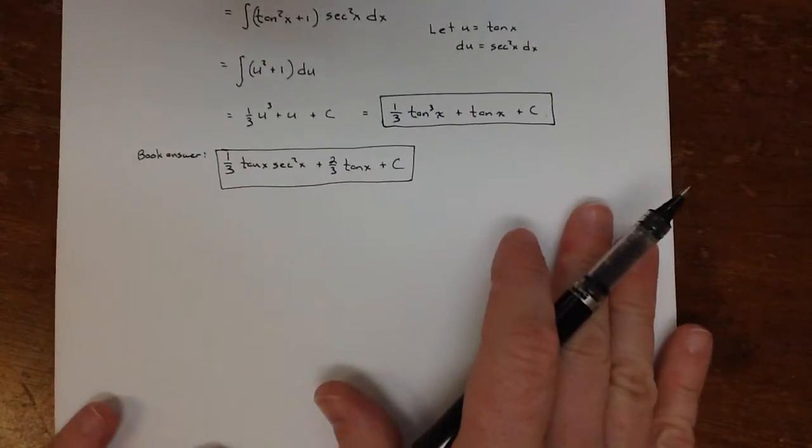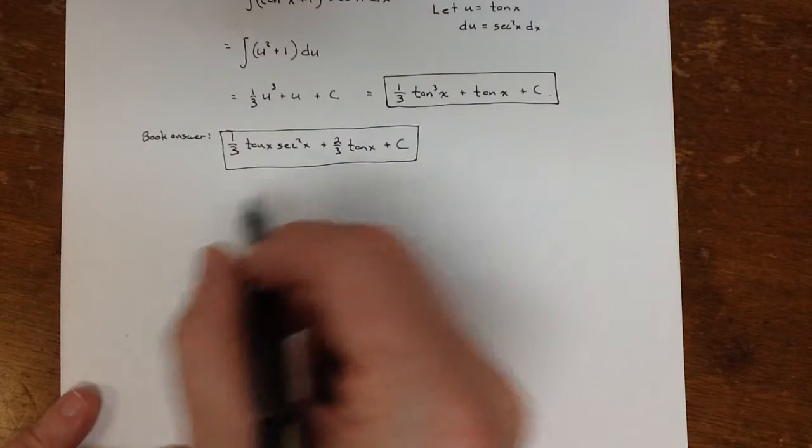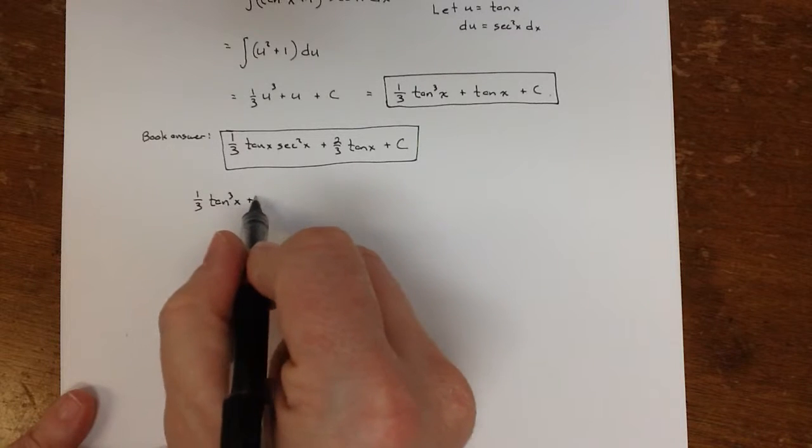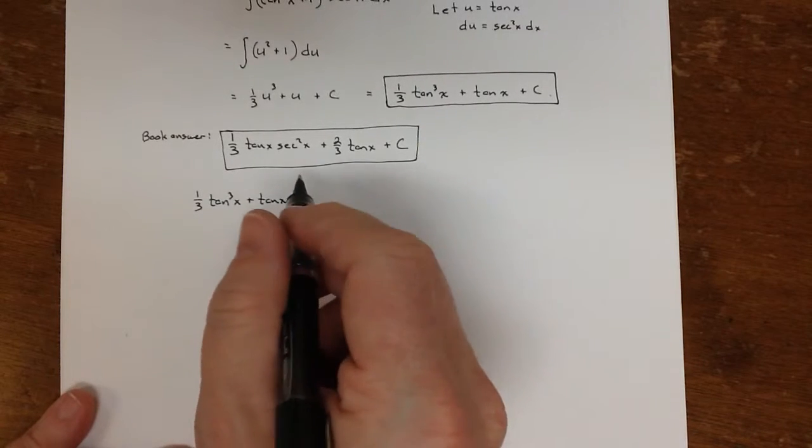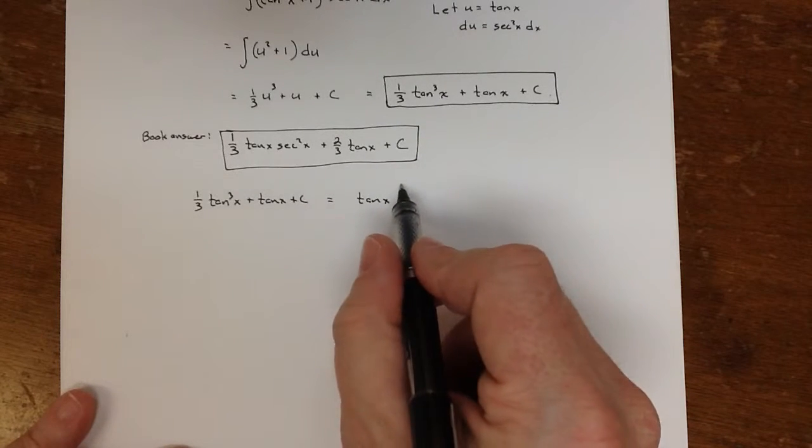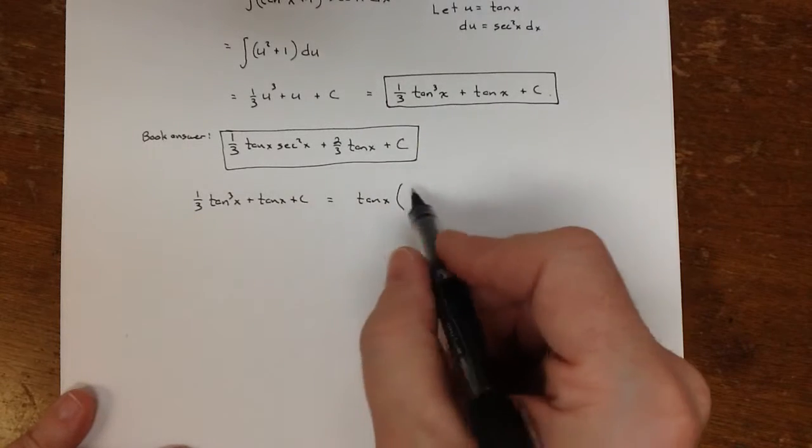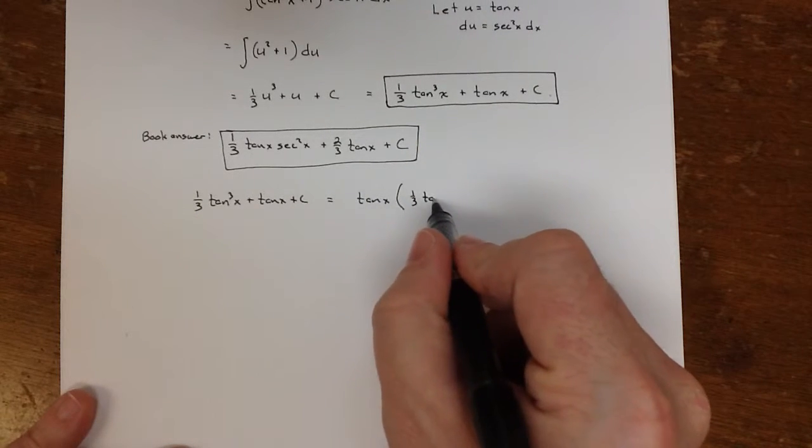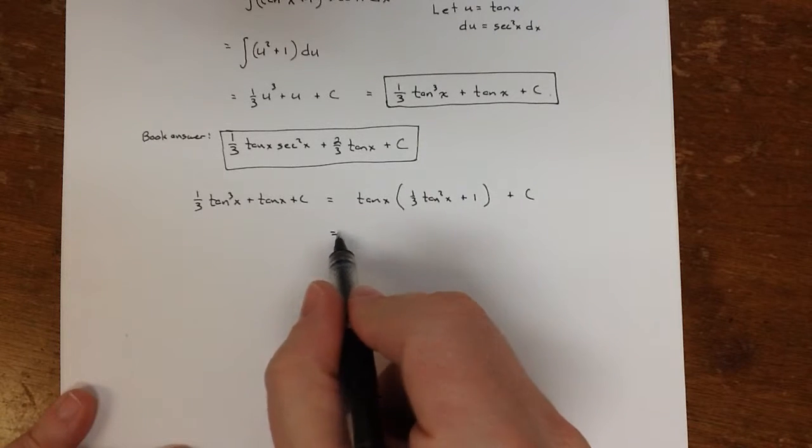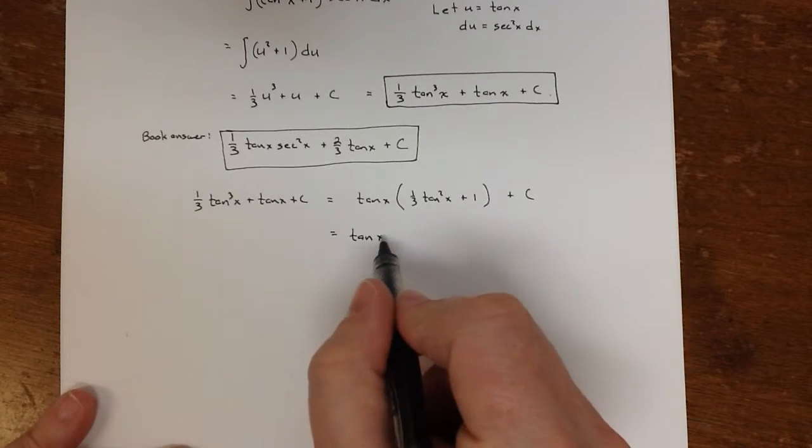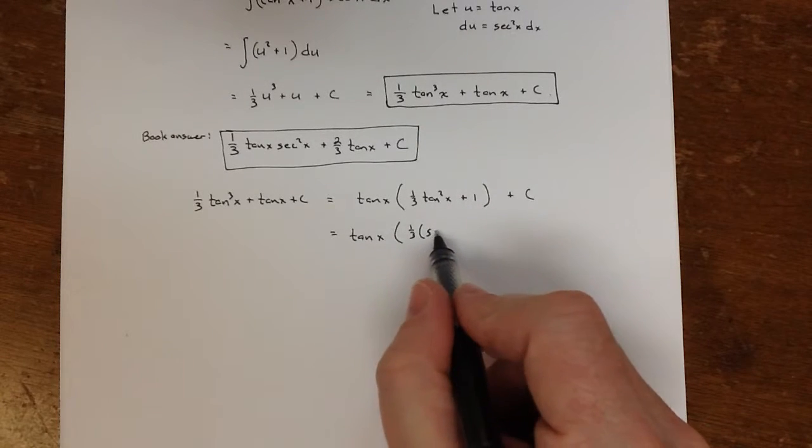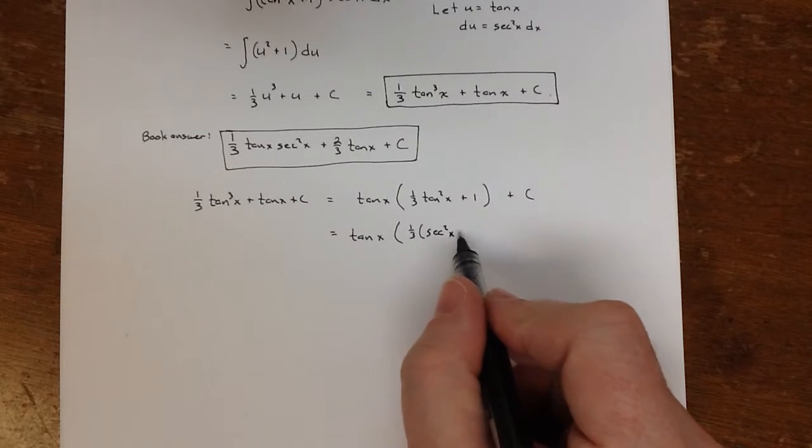If I take my answer, I'm going to convert it into theirs by using an identity. So if I take my answer, I'm going to factor a tan x out of this. So I'm left with tan x times 1/3 tan squared plus 1 plus c. Now I'm going to replace this tan squared using a Pythagorean identity. Tan squared is equal to secant squared minus 1.